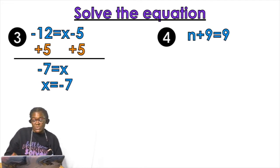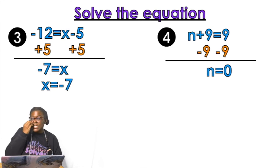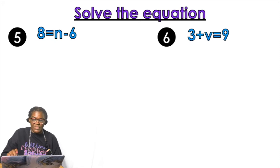So then I have n plus nine equals nine. And I need to get rid of that nine next to the n right. It's a plus nine. Eight equals n minus six. So what we're going to do.